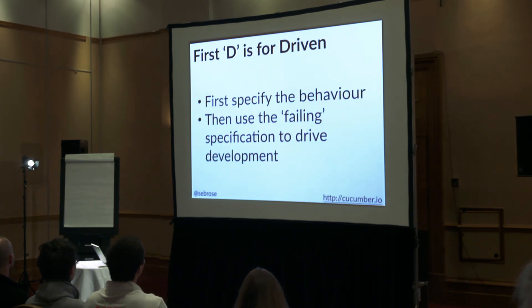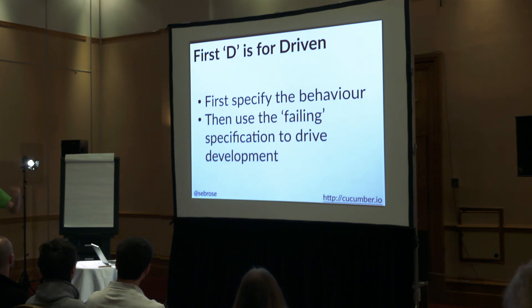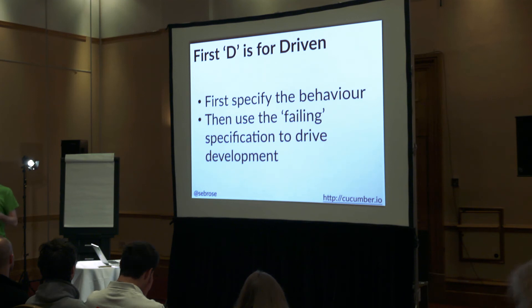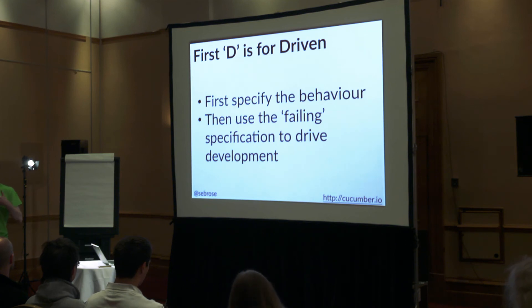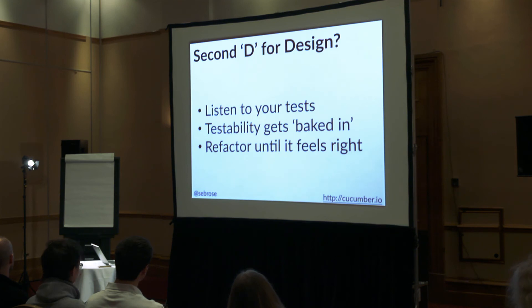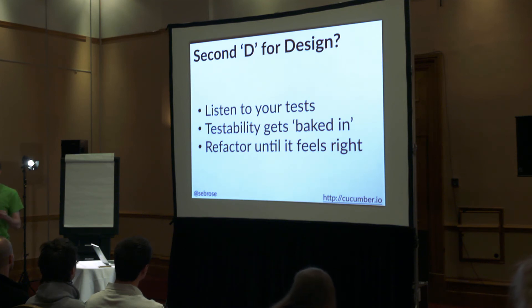The reason it's called test-driven, behavior-driven, or acceptance test-driven is that you have to specify the behavior before you do the implementation. We don't sort of do test-driven, writing the tests in the same sprint — you have to write them first. That's what makes it a design process. It's the failing specification — seeing it fail — that drives you to do the implementation. That's what the developer uses to think about what code to write.